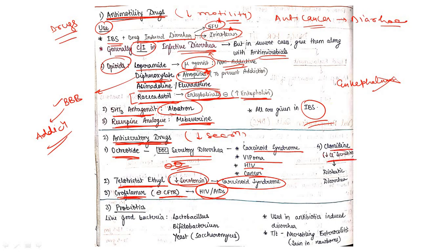Clonidine inhibits or decreases chloride secretion, so it can be given in diarrhea due to diabetes or diabetic diarrhea. Four drugs come under anti-secretory: octreotide, telotristat ethyl, crofelemer, then clonidine.